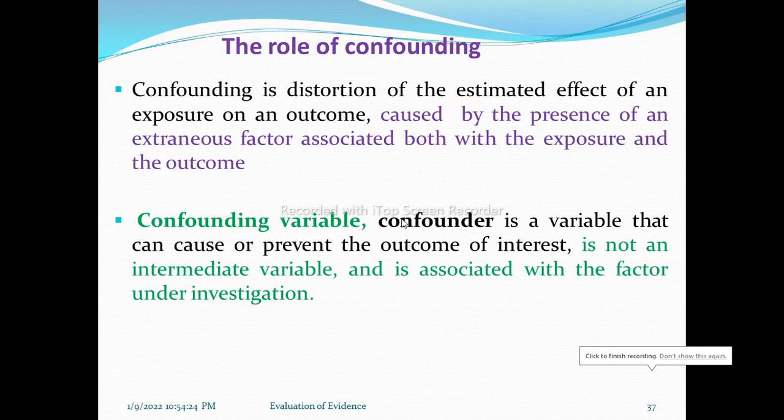Hello everyone. Last time we covered evaluating evidence and causality, including the introduction, the role of chance, the role of bias, selection bias and its types and examples, information bias and its types and examples, and ways of minimizing selection bias and information bias.